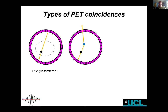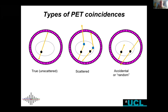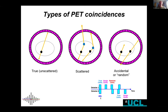Those are the main good coincidences — the unscattered ones. We can also have scatter, as mentioned. Sometimes scattered photons are not detected; we try to reject others via energy windowing, but there is still a scatter background that is unavoidable and must be accounted for. There is another effect called accidental coincidences: two annihilations happening very close in time where two photons from different annihilations are detected together. That is also a background effect we need to model. All of these physical effects must be modeled during image reconstruction.